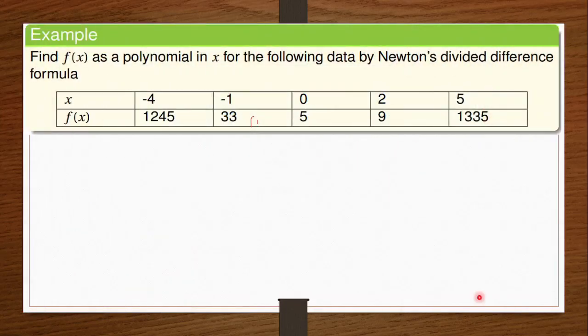We are given a table and you're supposed to find a particular f of x value when given an x value using the Newton's Divided Difference Formula. So what is this whole Newton's Divided Difference Formula?